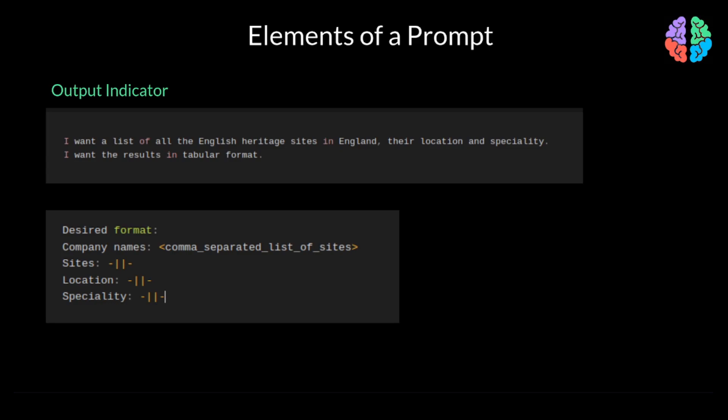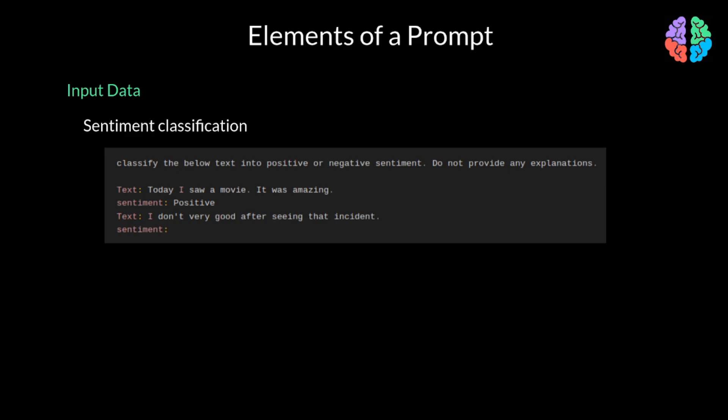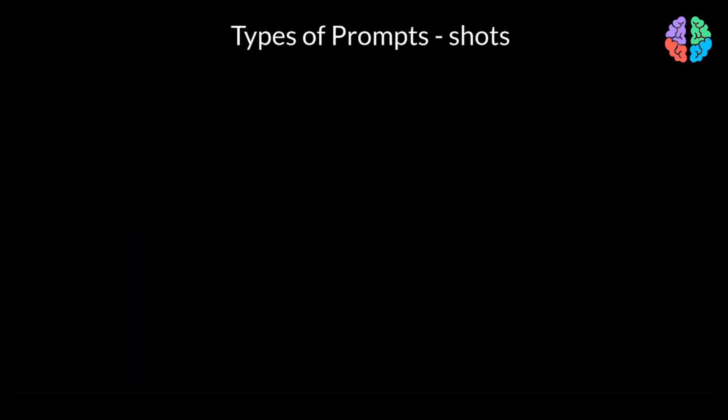A prompt can include one or more input data where we provide example inputs for what is expected from the model. In this case, sentiment classification. Take a look at this prompt where we start providing examples to show our intentions and also specify we don't want any explanation in the response. So, we can start with the instruction. Classify the below text into positive or negative sentiment and provide examples. This way of giving examples in the prompt is similar to how we explain to humans by showing examples.